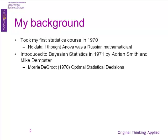Bayesian statistics was developing during the 50s, 60s, and 70s, but it really didn't come of age until the 90s. So, going in during the 70s, I was sort of one of the early guys.